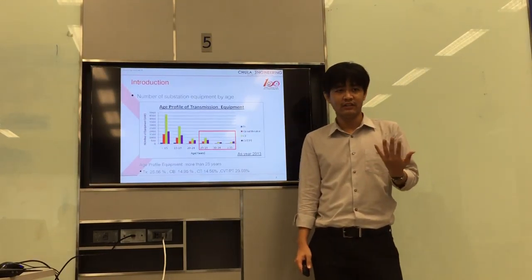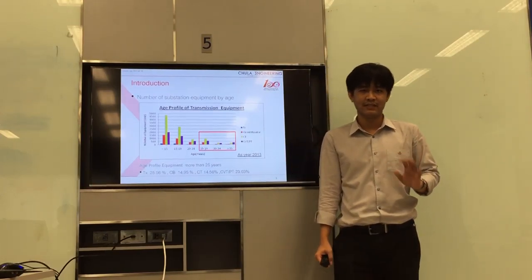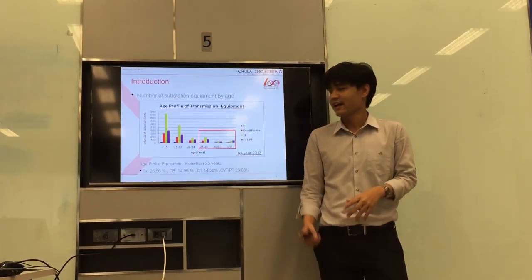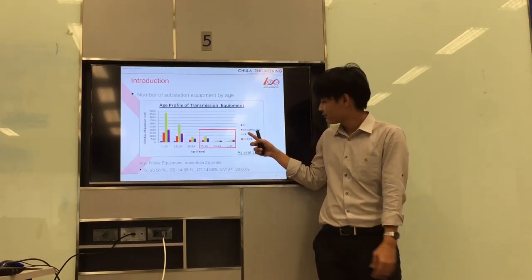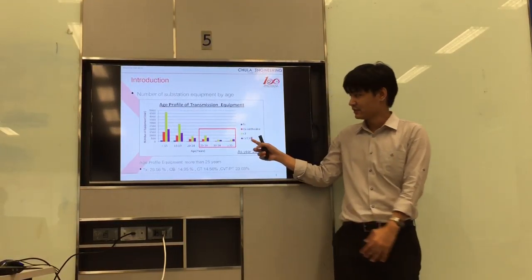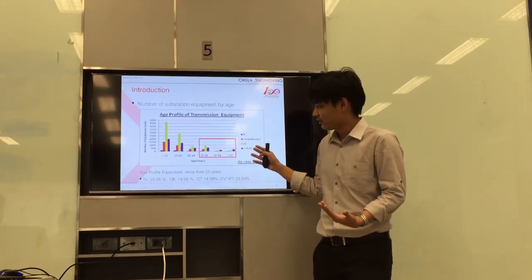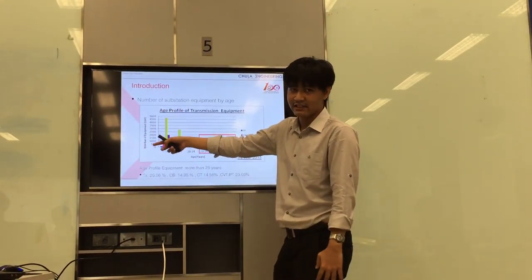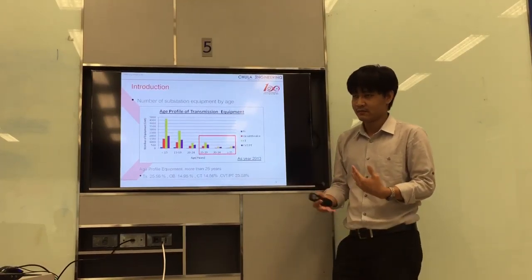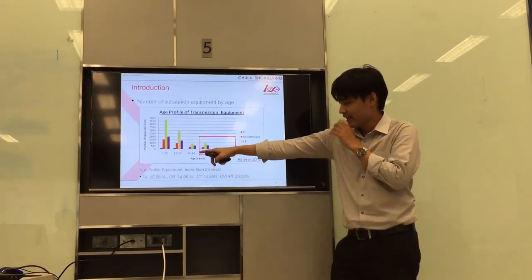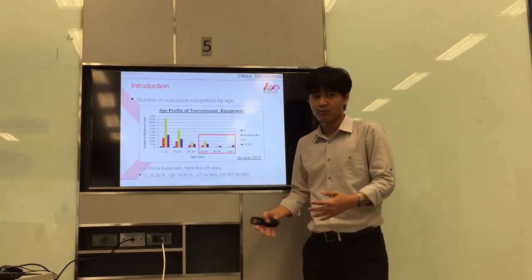Let's look at what assets a substation has. In a substation, they have a variety of assets such as Transformer, Circuit Breaker, Current Transformer, and Potential Transformer. This graph explains the number — the y-axis is the number of equipment installed in the transmission system, and the x-axis is the age, or year.